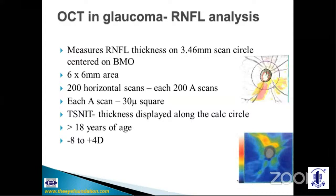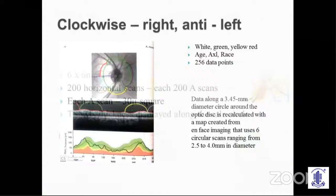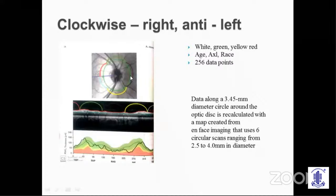The TSNIT thickness — temporal, superior, nasal, inferior, temporal — is depicted along the calculation circle. The Cirrus OCT measures in a clockwise direction, taking 256 data points and stretching them along a TSNIT graph that typically shows a double hump, representing that nerve fiber layer thickness at the poles is maximum. Anything in green is within 5 to 95% of the normative database. The Avanti OCT images between 2.54 millimeters to the 3.46 millimeter circle. The optic nerve head analysis uses Bruch's membrane opening as the disc margin, ILM termination as the cup margin, and the minimum rim width for neuroretinal rim area calculation — said to have great value in distinguishing glaucomatous from non-glaucomatous optic nerve damage.